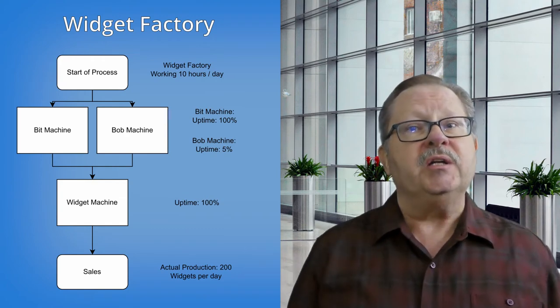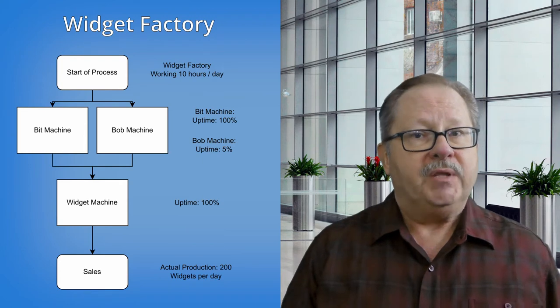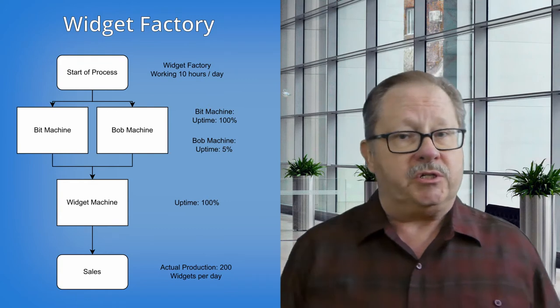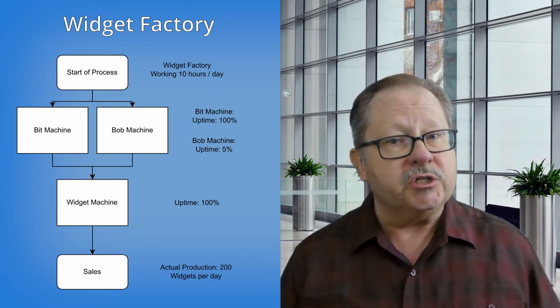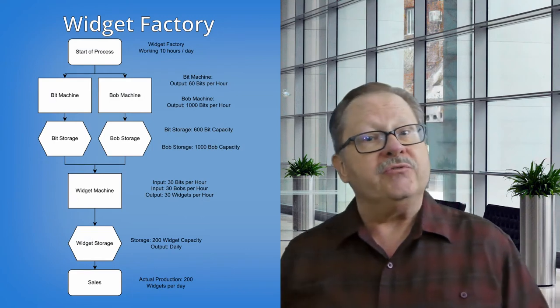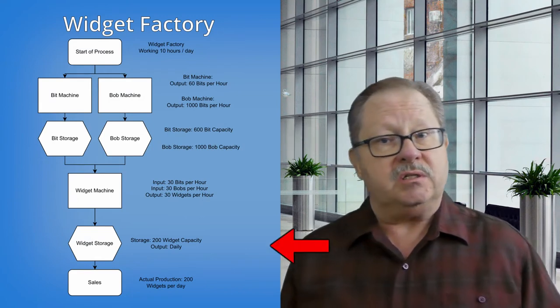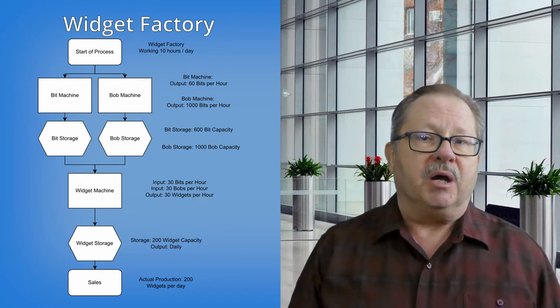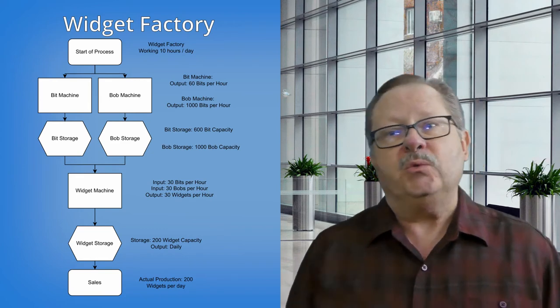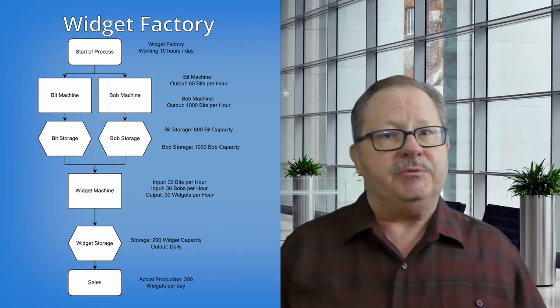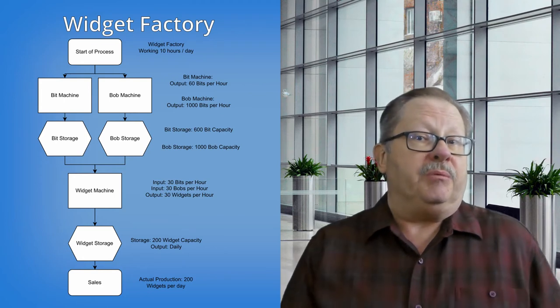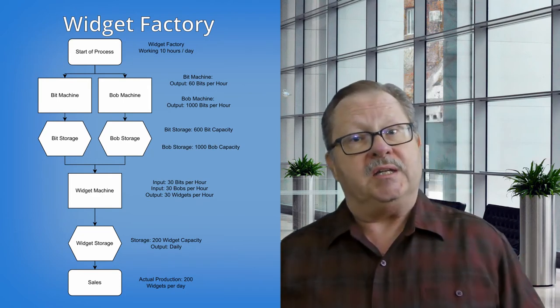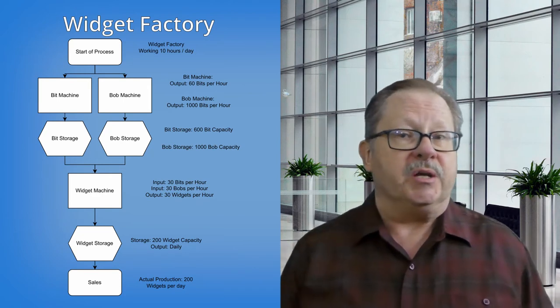Step three is to subordinate the system to that constraint. In our case, we want to make sure that the rest of the factory keeps that machine working as much as possible. Well, let's look at the storage space for the factory. We have storage space for our bits and our widgets. The bits have storage space for up to 10 hours or one full day of work. Bobs are small, so their storage is minimal. But the widget machine only has storage for up to 200 widgets, meaning that while the machine can produce 300, it stops when the storage is full. Since the truck only comes once a day, that space fills up before the end of the day.